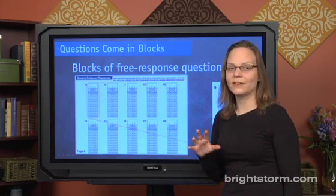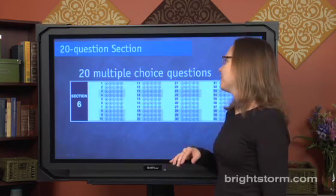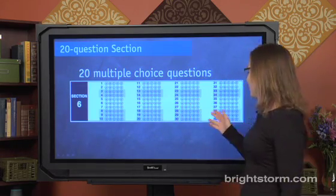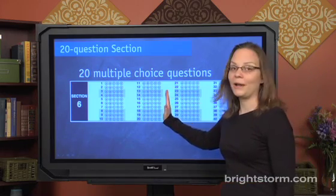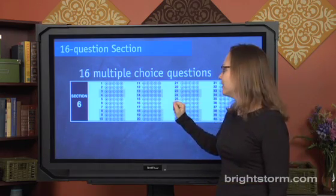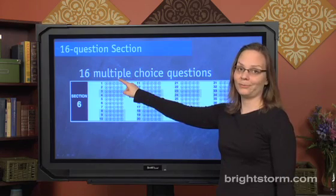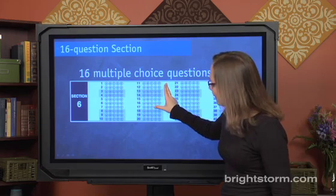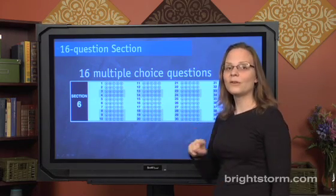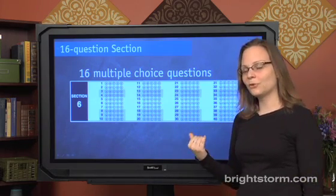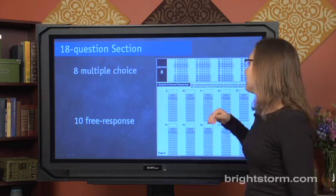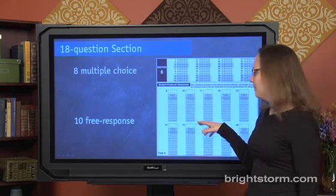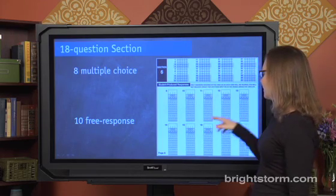Since there are three sections on math, here's what you'll see more specifically. One section is going to give you 20 multiple choice questions. Another section is going to give you 16 multiple choice questions. And then one final section would mix the multiple choice with the fill-ins. So you'd have 8 multiple choice, and then with the rest of your time, you would have the 10 free responses to deal with.